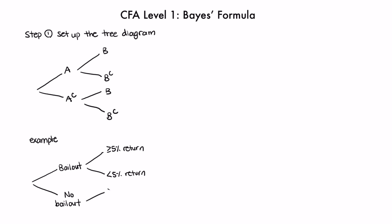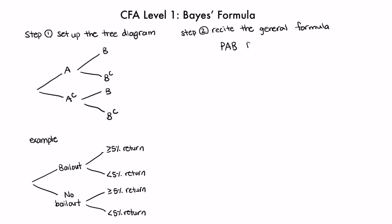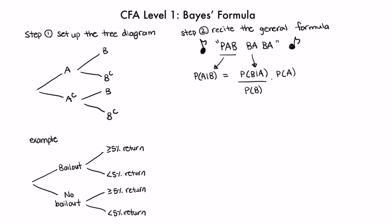Let's draw the tree diagram for this specific example. Step two is to recite the general formula. The mnemonic I use to remember Bayes' formula is PAP-BA-BA. PAP-BA-BA shows you the order of the A's and B's in the tree diagram as they appear in the formula. The probability of A given B — what we want to find — is equal to the probability of B given A, divided by the probability of B, times the probability of A.